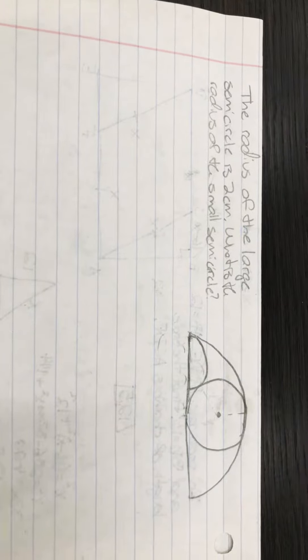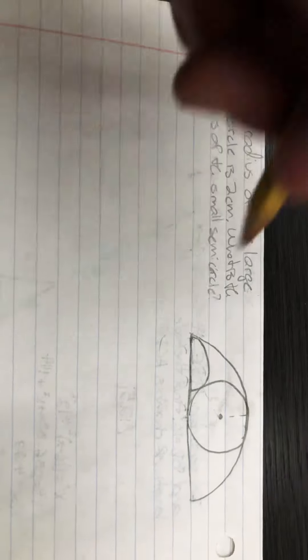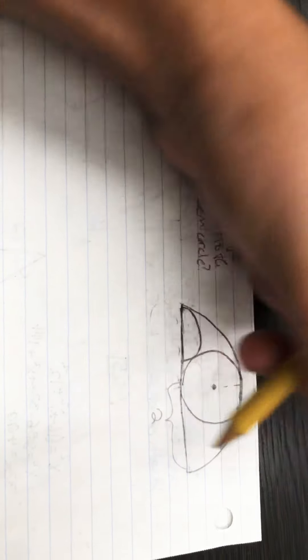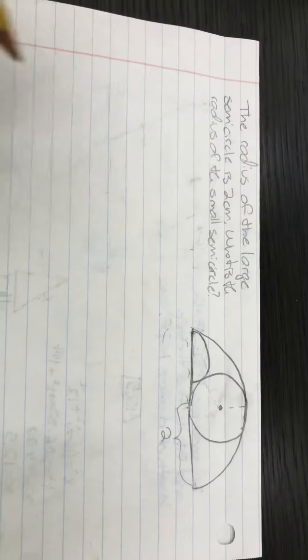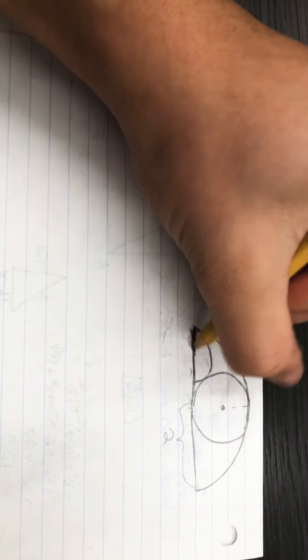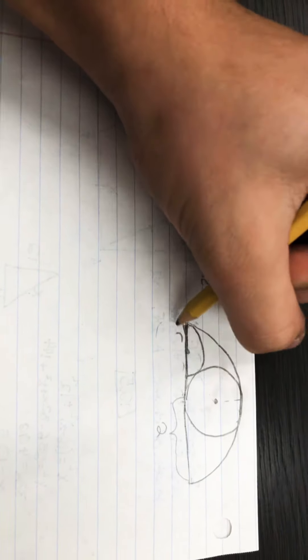The radius of the large semicircle is 2 centimeters. That means that this right here is 2 centimeters. What is the radius of the small semicircle, which is this right over here? I'm going to label it R.